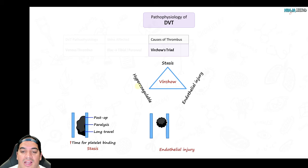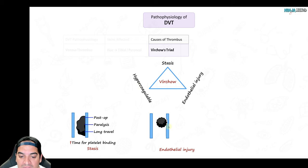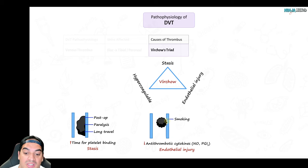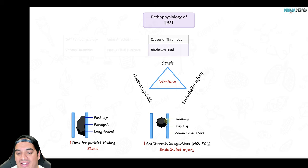Endothelial injury is the destruction of the endothelium, which normally releases nitric oxide and prostacyclin to block platelet binding. With endothelial injury, platelets can stick right away. Risk factors include smoking, surgical procedures, and especially venous catheters — particularly femoral central venous catheters — which can definitely cause this.